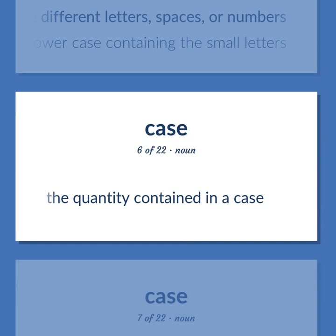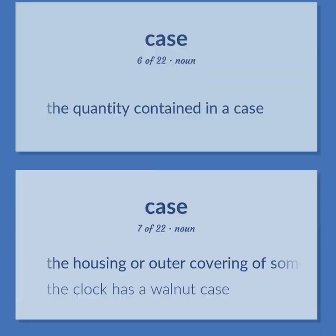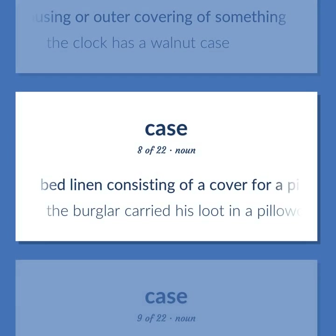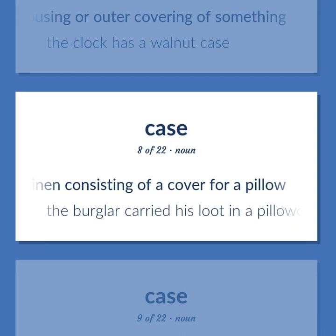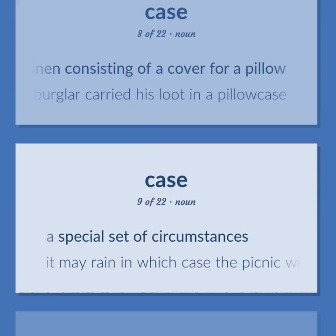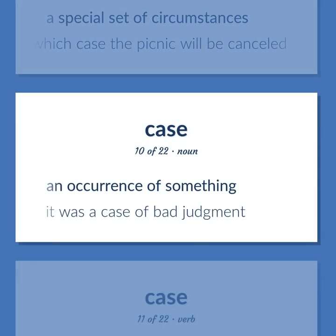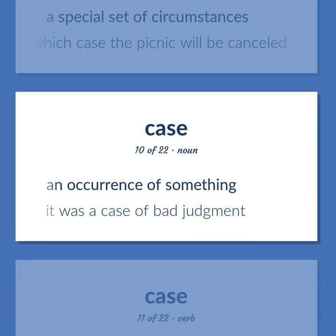Case: The quantity contained in a case. The housing or outer covering of something — the clock has a walnut case. Bed linen consisting of a cover for a pillow — the burglar carried his lute in a pillowcase. A special set of circumstances — it may rain, in which case the picnic will be cancelled. An occurrence of something — it was a case of bad judgment.